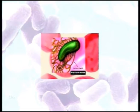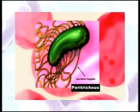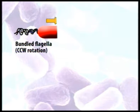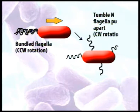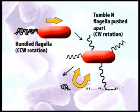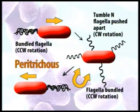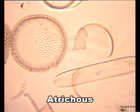Another condition is peritrichous, where flagella are present all around the body, as seen in Salmonella typhi. Bacteria that do not have any flagella are referred to as atrichous.